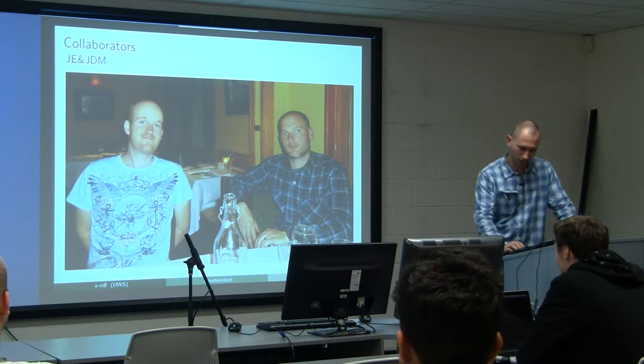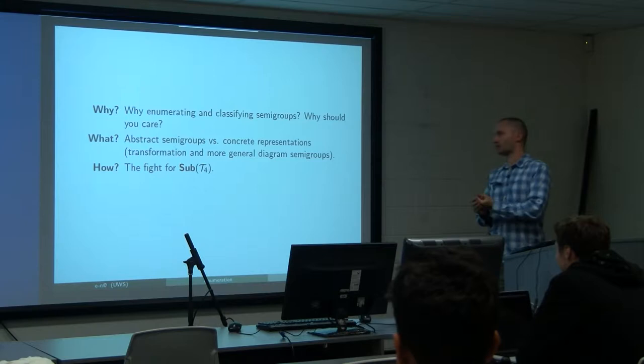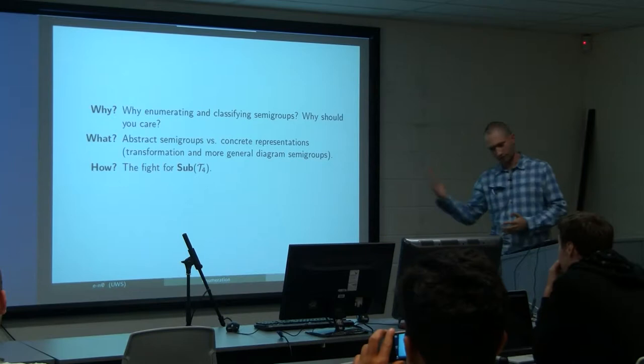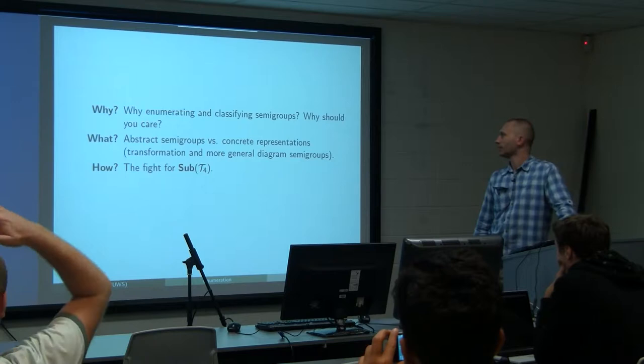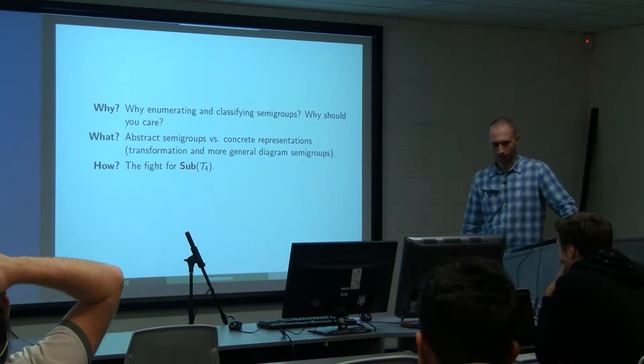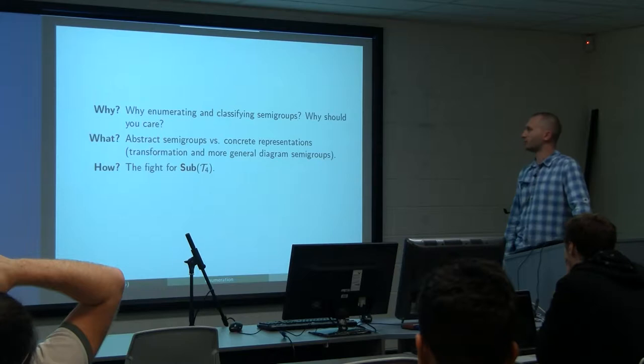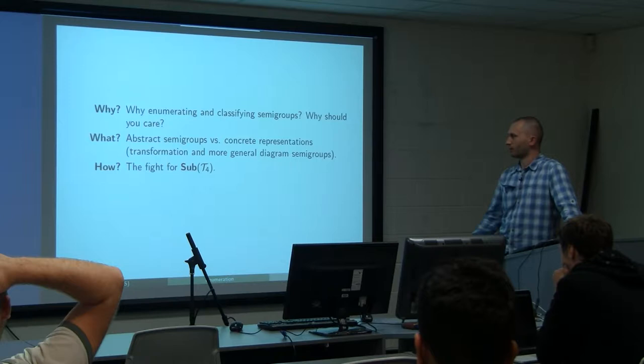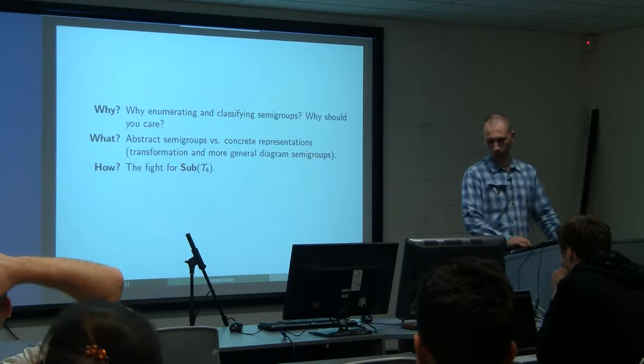I would like to answer three questions. Professor Nigel said that we are enumerating cancellation semigroups, but the obvious question is why? And why should you care? And I need to specify what exactly we are trying to enumerate — what is the object. So: why, what, and how?